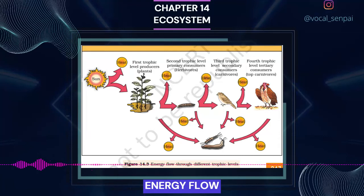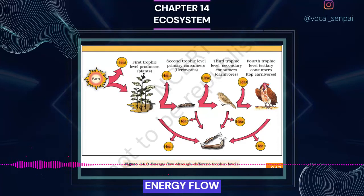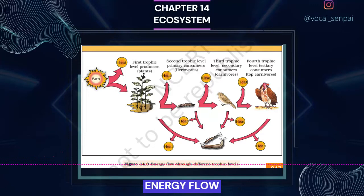Measurement of biomass in terms of dry weight is more accurate. The number of trophic levels in the grazing food chain is restricted as the transfer of energy follows the 10% law. Only 10% of the energy is transferred to each trophic level from the lower trophic level. In nature, it is possible to have so many levels: producer, herbivore, primary carnivore, secondary carnivore in the grazing food chain.